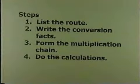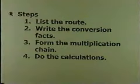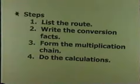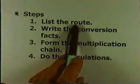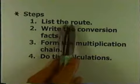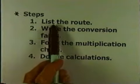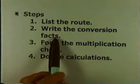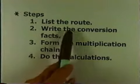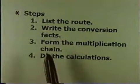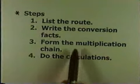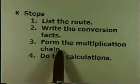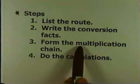Let's look at the steps in unit analysis. I put a star there because you really need to know these steps. The first step is to list the route — how can you get there? Once you list the route, you write the conversion facts, which are the conversion facts you've memorized. Then you form the multiplication chain so you're canceling units you don't want and being left with units that you do want. Once you get the units fixed, then you do the calculations.